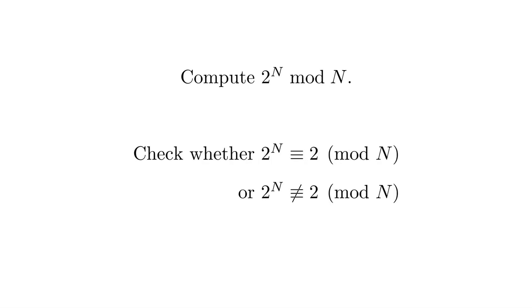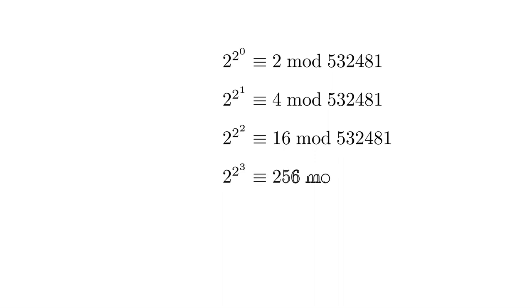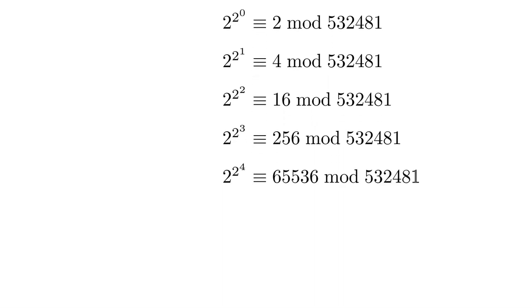Now, I don't really want to multiply 2 by itself half a million times. So instead, what I'm doing here is repeated squaring. I'm starting out with 2, squaring that to get 2 to the 2, squaring that to get 2 to the 4, squaring that to get 2 to the 8, and so on, and so on, and so on.